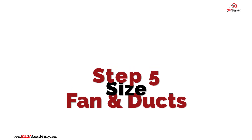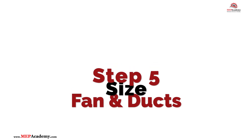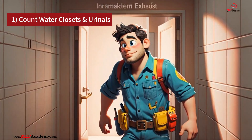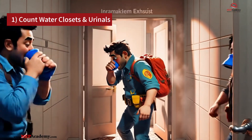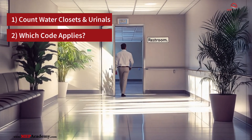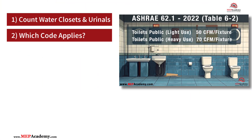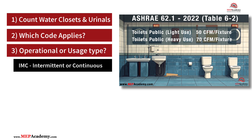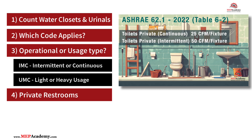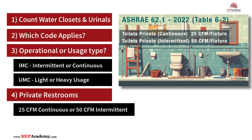Step 5: Select exhaust fans or design ductwork to meet or exceed the total CFM requirements. To summarize: (1) Size exhaust fans based on fixture count and usage intensity. (2) UMC 2024, IMC 2024, and ASHRAE 62.1 work together to guide airflow requirements. (3) Always confirm whether fans operate intermittently or continuously, and if using UMC, whether use is light or heavy to apply the correct rates. (4) For private-use restrooms, the required exhaust is 25 CFM for continuous or 50 CFM for intermittent system operation.